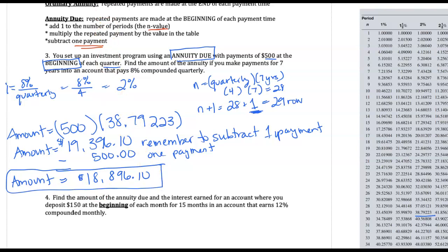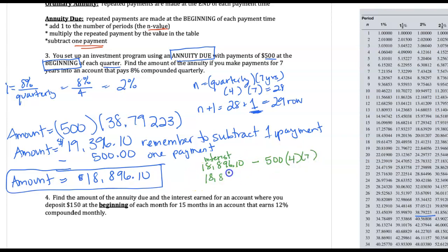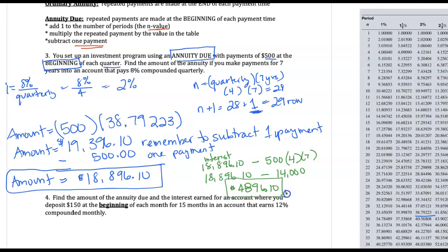To calculate interest only, the interest is the difference between the money we put in and the money we get out at the end. The money we get out is $18,896.10. The money we put in was $500 payments, four times a year for seven years: $500 times four times seven gives us a total of $14,000 invested. The difference between $18,896.10 and $14,000 is $4,896.10, and that's the interest only.